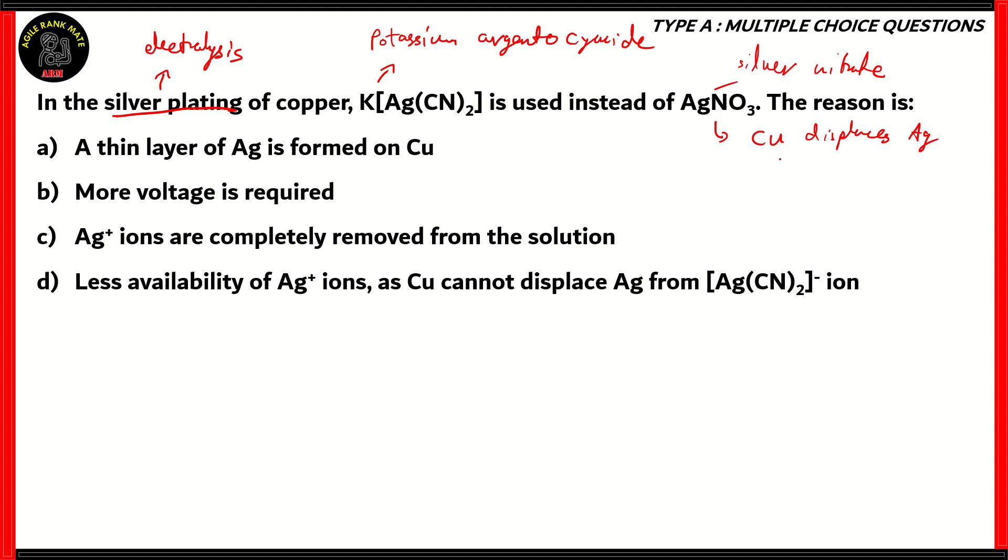Option A says a thin layer of Ag is formed on Cu. If we were to use silver nitrate, then copper displaces Ag for silver as Cu is more electropositive. Therefore option A is incorrect. AgNO3 forms a thick layer or maybe even replaces copper by itself, so a thin layer of Ag formed on Cu because of AgNO3 is incorrect.